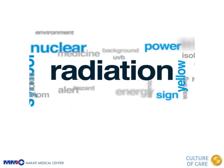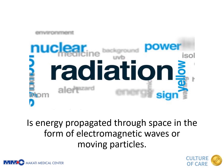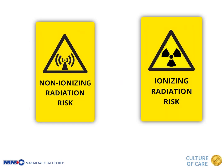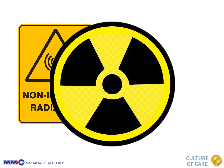Let's first define the word radiation. Radiation, by definition, is the energy propagated through space in the form of electromagnetic waves or moving particles. We have two types: non-ionizing and ionizing radiation. However, our focus in this lecture will be on ionizing radiation only.